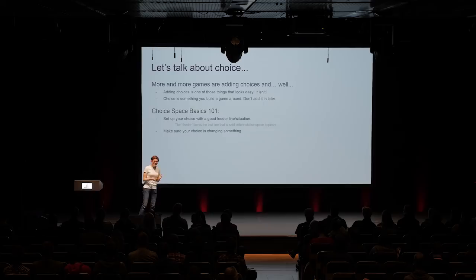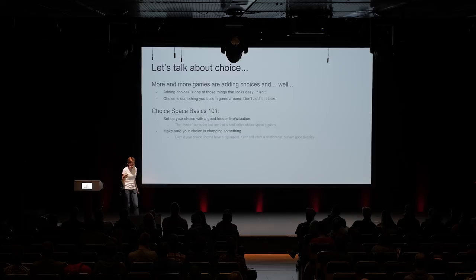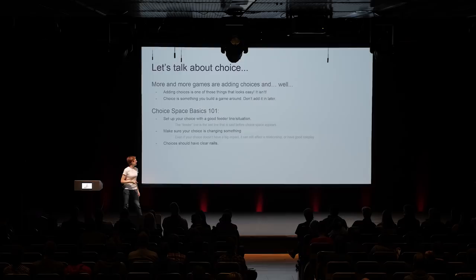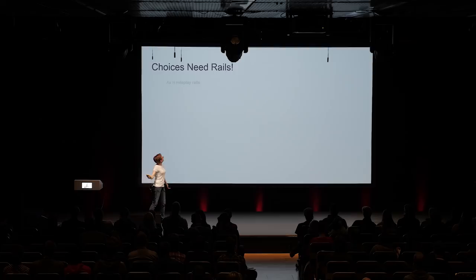Make sure your choice is changing something. This seems basic but it's actually pretty hard, especially when working with constraints. Even if your choice doesn't seem like it has a big impact, it can still affect a relationship or have good role play — there are all kinds of ways to make your choice change something without splitting your plot, story, or locations. And finally, choices need to have clear rails — something we talk about a lot at Telltale when coming up with choice space.